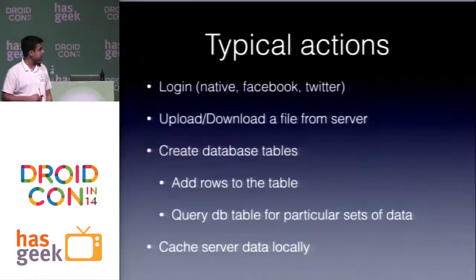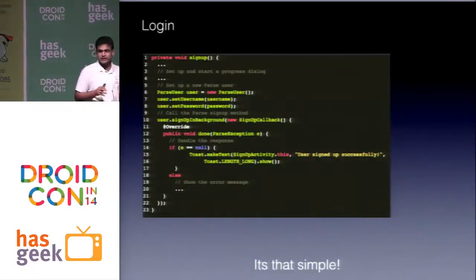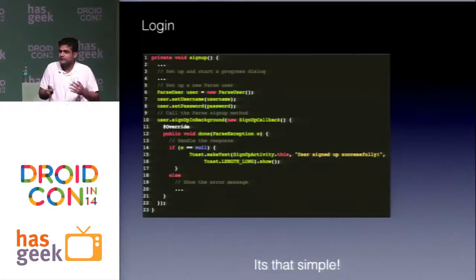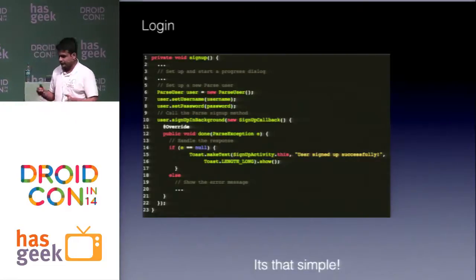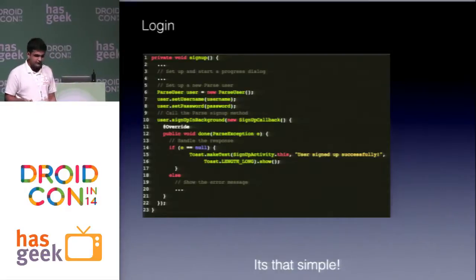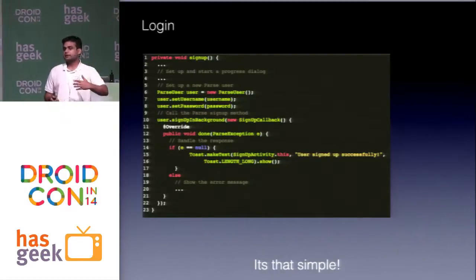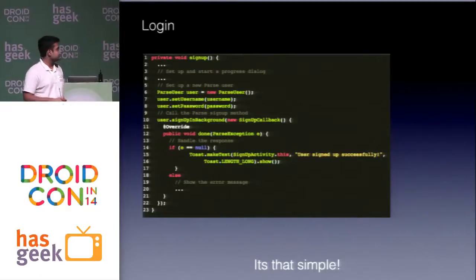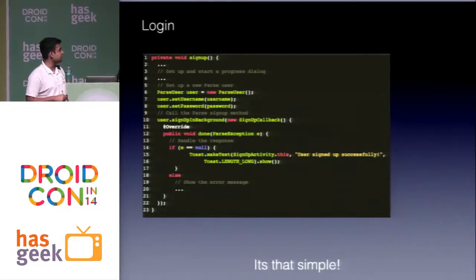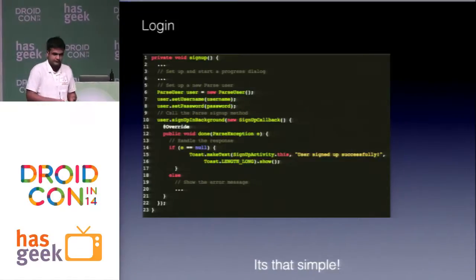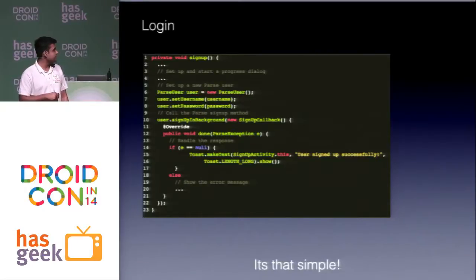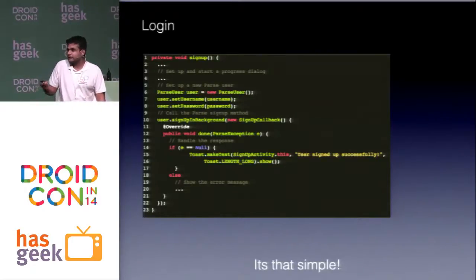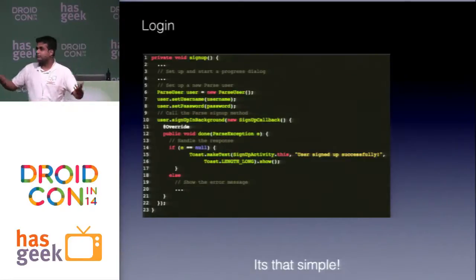Here's some example code — the purpose is to show how simple it is. If you're using Parse, you just add the libraries to your project. For the login process, you set an onClick listener and write just three calls: ParseUser user = new ParseUser(), user.setUsername(), user.setPassword(), and then user.signUpInBackground(). Those three calls give you login. It's pretty simple — everyone should be using it to take their apps to the next level.